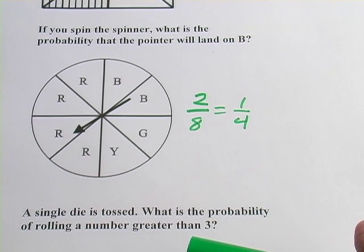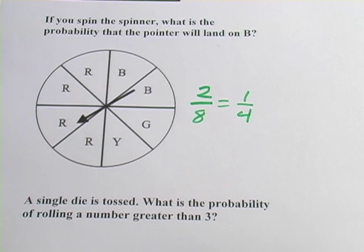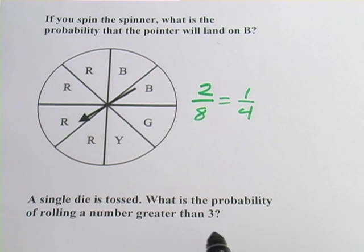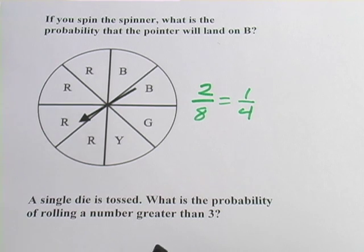And then we've got one more down here. It says a single die is tossed. What is the probability of rolling a number greater than 3? Well we've done problems with dice before. And we know that the probability of getting any single number is a 1 in 6, because there are 6 sides on a die.